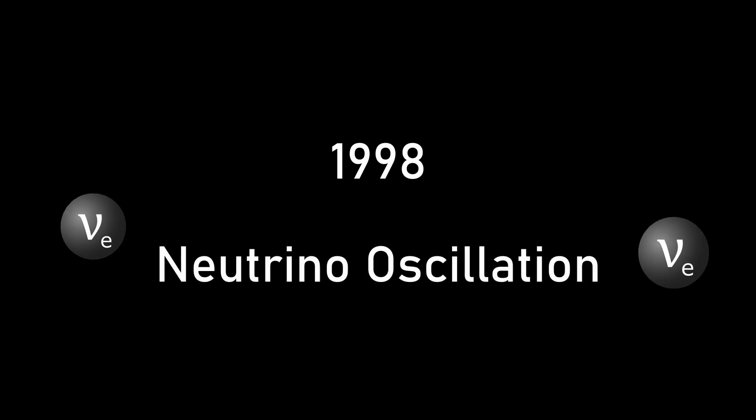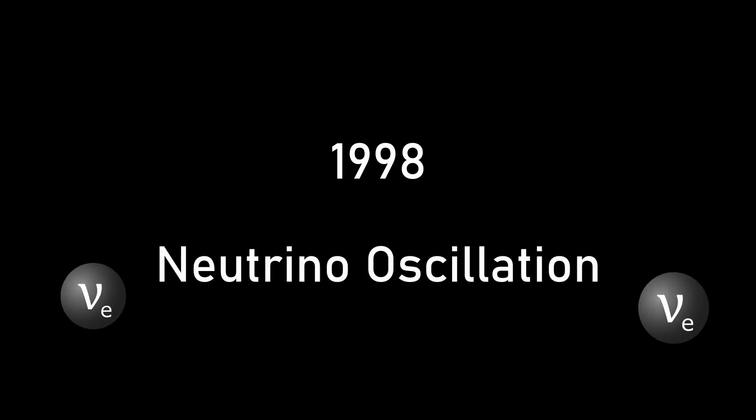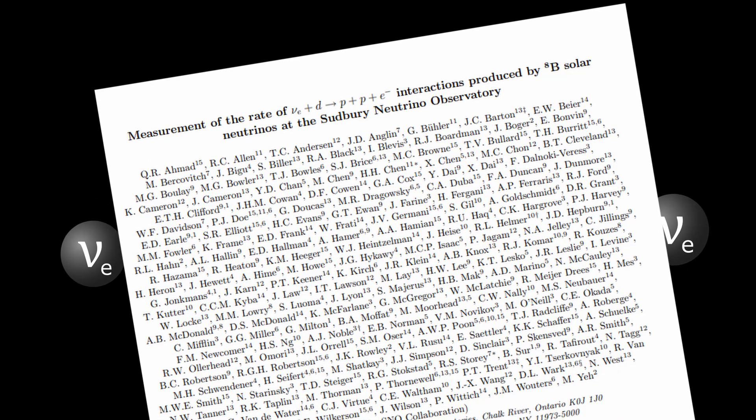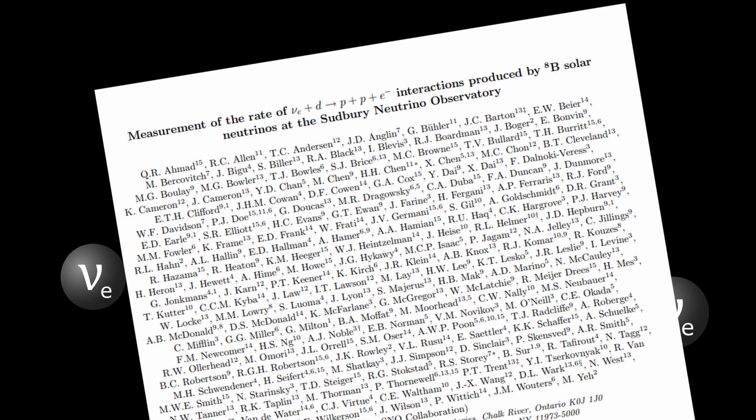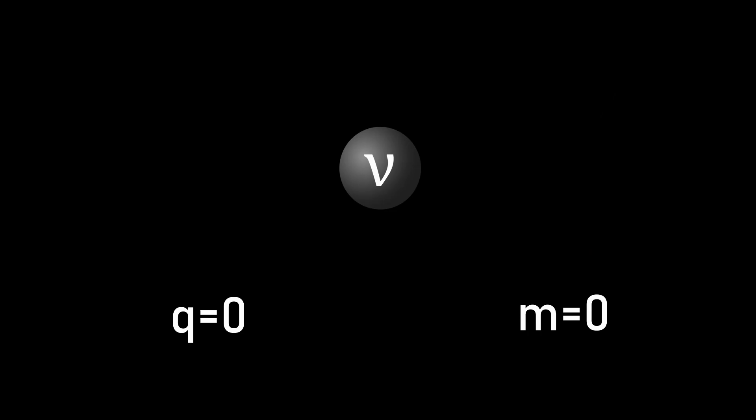It's in 1998 that evidence for a phenomenon known as neutrino oscillation was experimentally put forwards, with the 2001 SNO results confirming that solar neutrinos can oscillate. Neutrino oscillation is a process in which neutrinos can change their type, like the electron neutrinos coming from our Sun changing into tau or muon neutrinos, and this can only happen if neutrinos have mass.